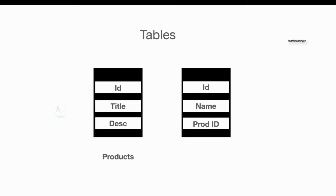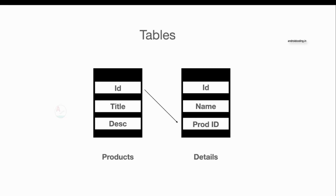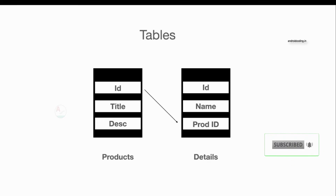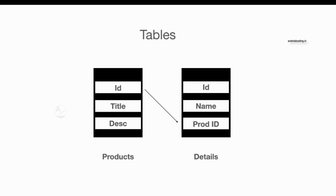The product_id in the details table is nothing but the same id from our products table. We store that id in the details table to establish a relation between the two. Whenever we insert data into the products table, we fetch the returned id and store it in the details table as product_id. In both tables, the id is an auto-incremented value, so we don't specify it manually.